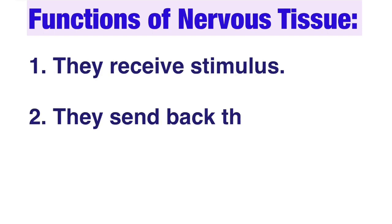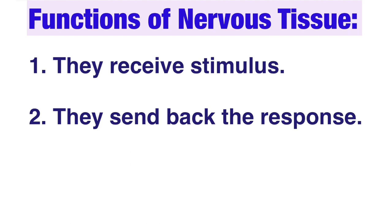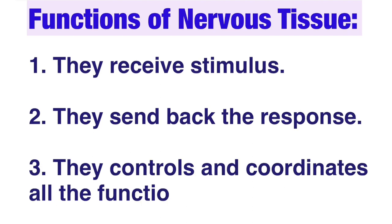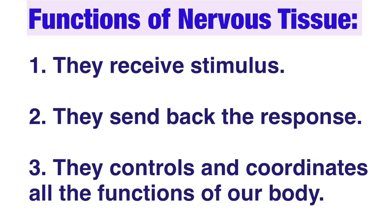So what is the function of nervous tissue? Number one, they receive stimulus. Number two, they send responses after assessing those stimuli. Number three, by this process of receiving stimulus and sending response, the nervous tissue controls and coordinates all the functions of our body.